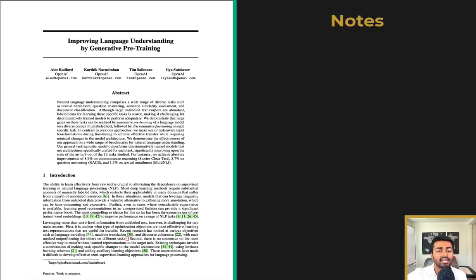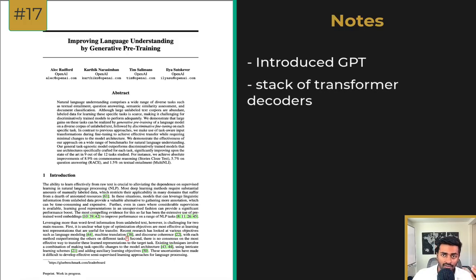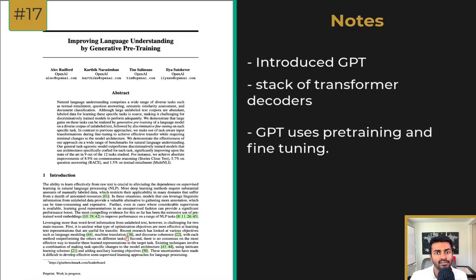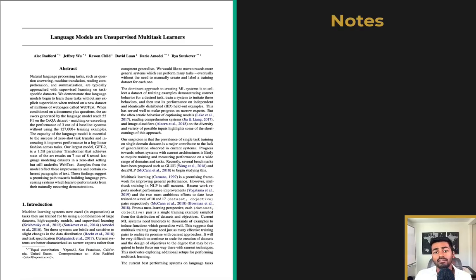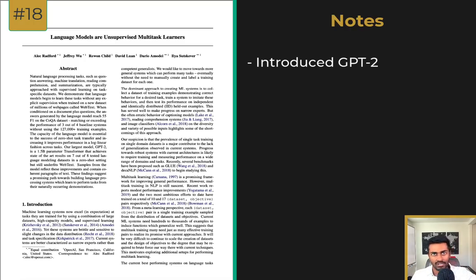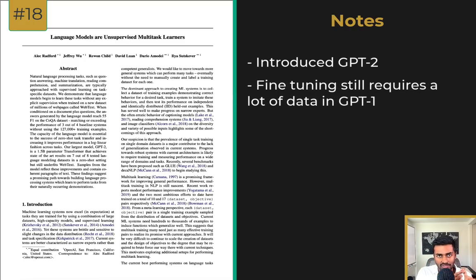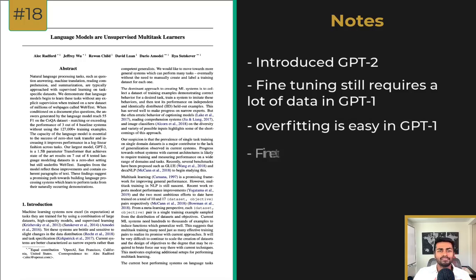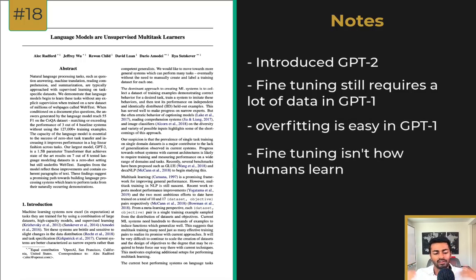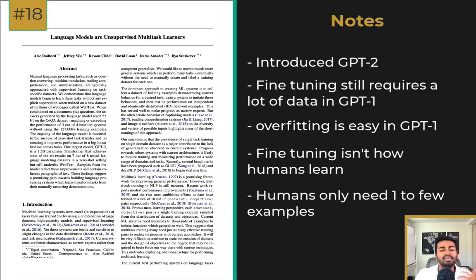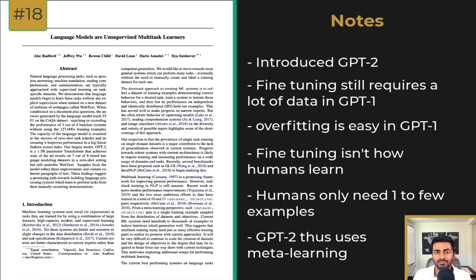Next up, we have Improving Language Understanding by Generative Pre-Training — the paper that introduced GPT. GPT is a stack of transformer decoders that also leverages transfer learning to learn language tasks, using the same pre-training and fine-tuning phases seen with BERT. The next paper, Language Models Are Unsupervised Multitask Learners, introduced GPT-2. The older versions of GPT and BERT still required quite a bit of data for fine-tuning and were prone to overfitting. The fine-tuning process also doesn't mirror how humans learn — we don't need hundreds of thousands of examples to translate or complete sentences; we might need just one or a few. This is where meta-learning approaches like zero-shot, one-shot, and few-shot learning come into play.